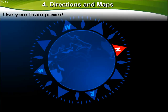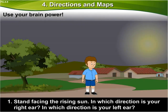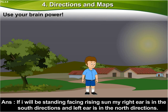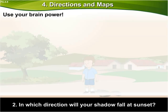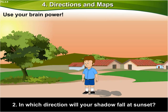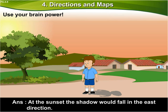Use your brain power. Number 1: Stand facing the rising sun. In which direction is your right ear? In which direction is your left ear? If you are standing facing the rising sun, your right ear is in the south direction and the left ear is in the north direction. Number 2: In which direction will your shadow fall at sunset? At sunset, the shadow would fall in the east direction.